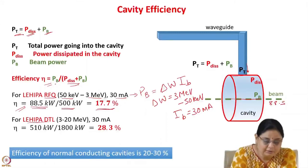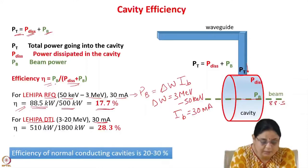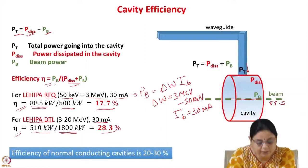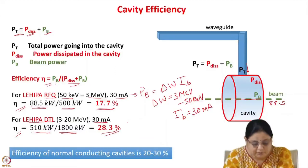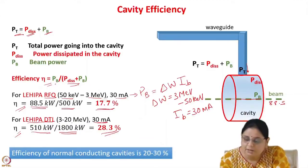Similarly, for the drift tube linac at LEHIPA, which accelerates a 30 milliampere proton beam from 3 to 20 MeV, the beam power is 510 kilowatts and the total power required is 1800 kilowatts. Calculating the efficiency again, it is just less than 30%. So the efficiency of normal conducting cavities is very small because a large amount of power is dissipated on the cavity walls.